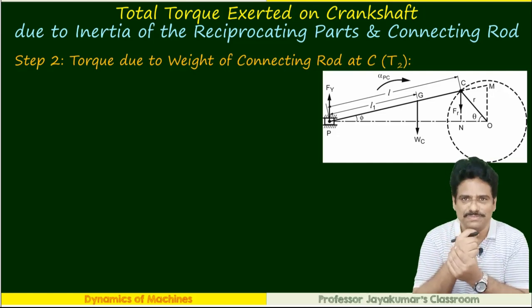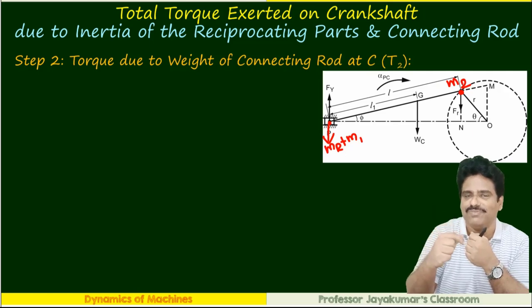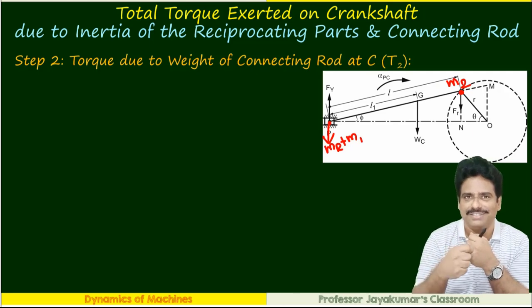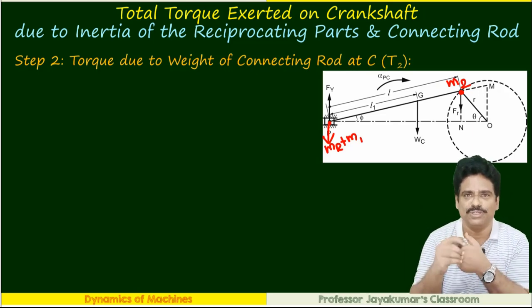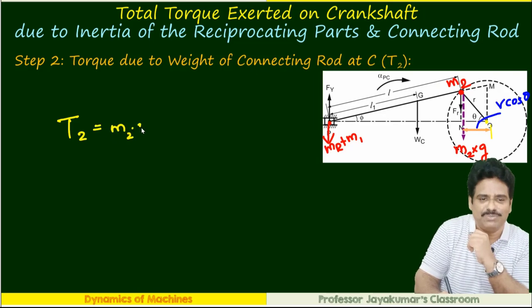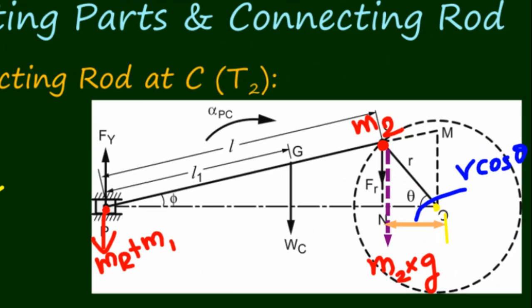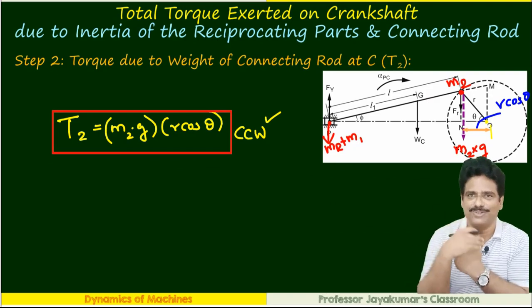Step 2: since portion of the connecting rod mass m2 acts at crank pin C, it contributes additionally to crankshaft torque. I call this torque T2. T2 = m2 × g × r·cos θ. This is the weight multiplied by the perpendicular distance r·cos θ. Using this formula we find the magnitude of T2. The force m2·g creates a counter-clockwise moment about O.